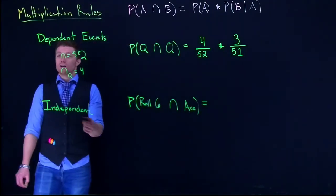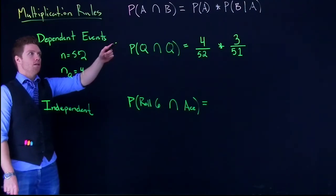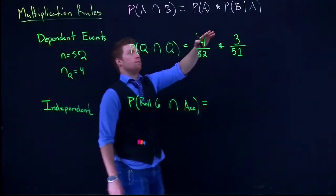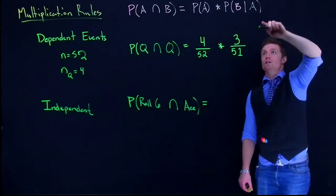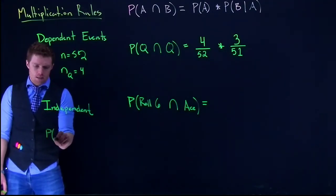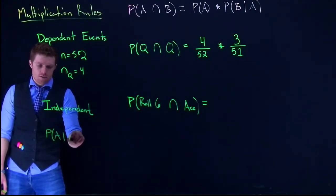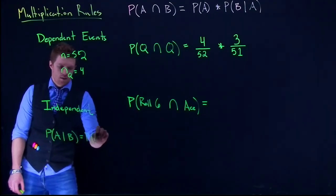Now remember, things are independent if and only if the probability of one occurring given that the other has occurred is just equal to the first one. So the probability of A given B is just equal to the probability of A.